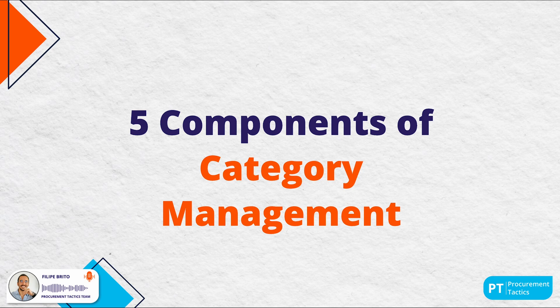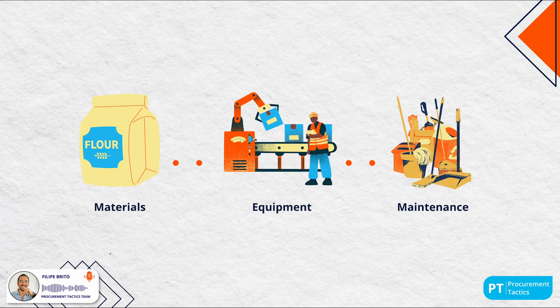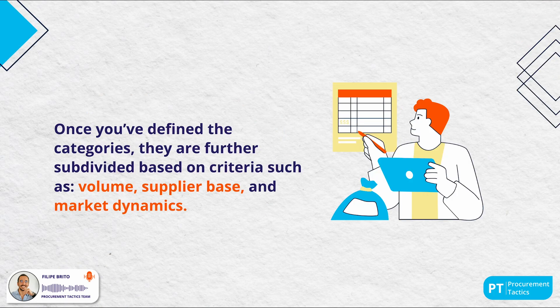Let's break category management down into five key components. First, define the categories: identify and define the different categories of goods and services the organization procures. Categories might include materials, machinery and maintenance services. For a food manufacturer, materials would mean ingredients like flour and oil, machinery would include cutting tables and benchtop extruders, and maintenance services would include cleaning materials and inspection services. Categories are further subdivided based on volume, supplier base and market dynamics.